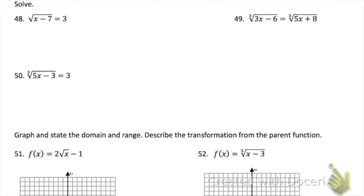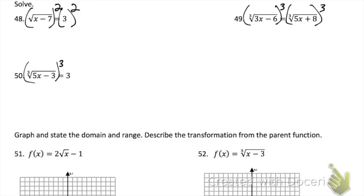Problem 48 — to solve, start by getting the square root alone, which it is, then take each side to the second power to cancel out the square root and solve for x. Problem 49 — same idea, but cube each side to cancel out the cube root and solve for x. For problem 50, cube both sides to cancel the cube root and solve for x. On all three of these, make sure you check your answers — you might get extraneous solutions, meaning you did everything right but the answer doesn't work when plugged back in.